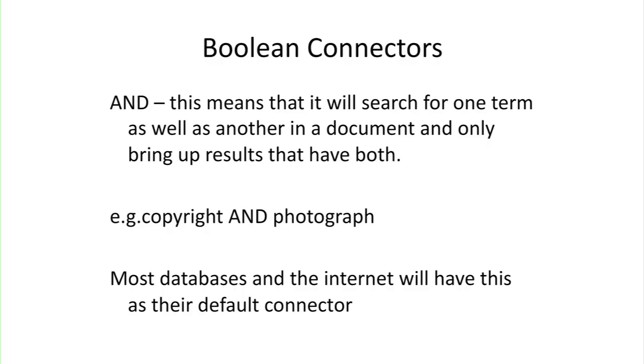So let's go through a number of the most common Boolean terms. AND is probably the most popular Boolean connector — this means it'll search for one term as well as another within a document, and only bring up results that have both those terms. So for example, if you're looking for articles or cases on copyright to do with photographs, you could search for copyright AND photograph. You'll find that most databases and the internet will have this as their default connector, so if you just leave a space between the words, they will just presume you mean AND.